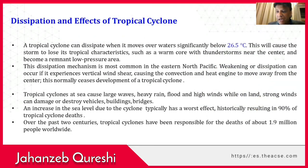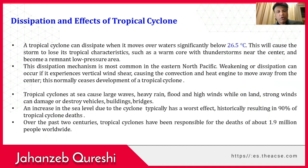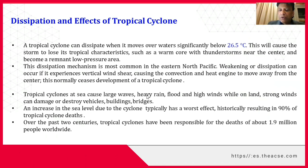Dissipation and effects of tropical cyclones. A tropical cyclone can dissipate when it moves over waters significantly below 26.5 degrees Celsius. This causes the storm to lose its tropical characteristics, such as a warm core with thunderstorms near the center, and become a remnant low pressure area. This dissipation mechanism is most common in the Northern Pacific. Weakening or dissipation can also occur if the cyclone experiences vertical wind shear, causing the convection and heat engine to move away from the center, which normally ceases the development of a tropical cyclone.